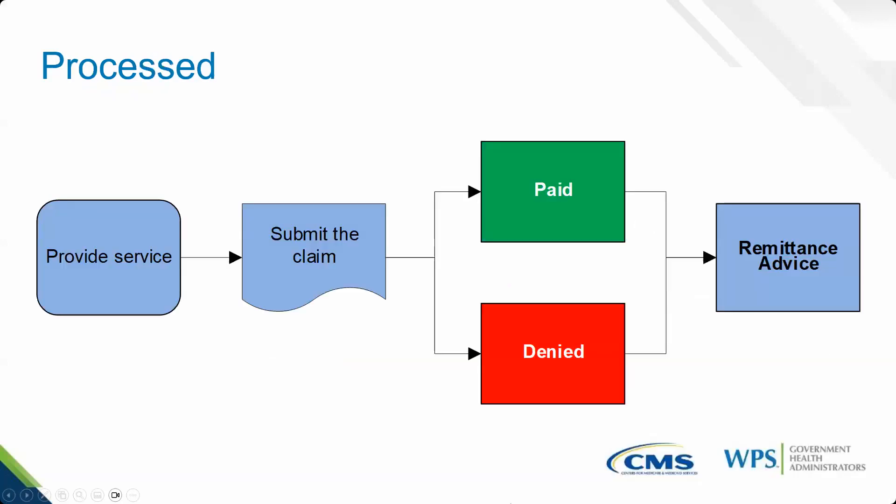This graphic shows the path for a processed claim. The service is provided, a claim is submitted to Medicare — most often electronically. The claim line or lines will either pay or deny, and then the remittance advice is generated.